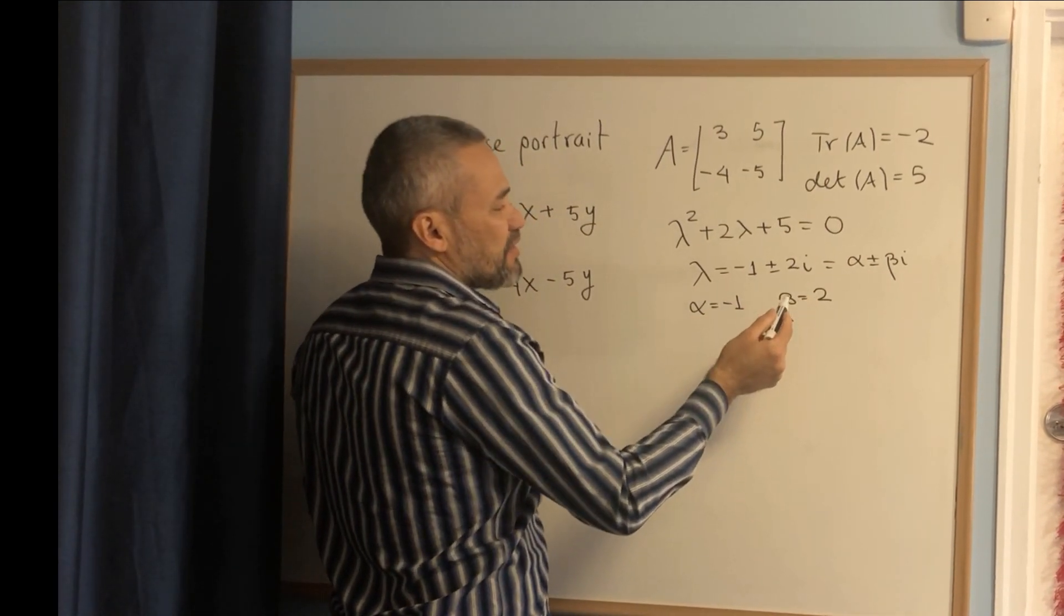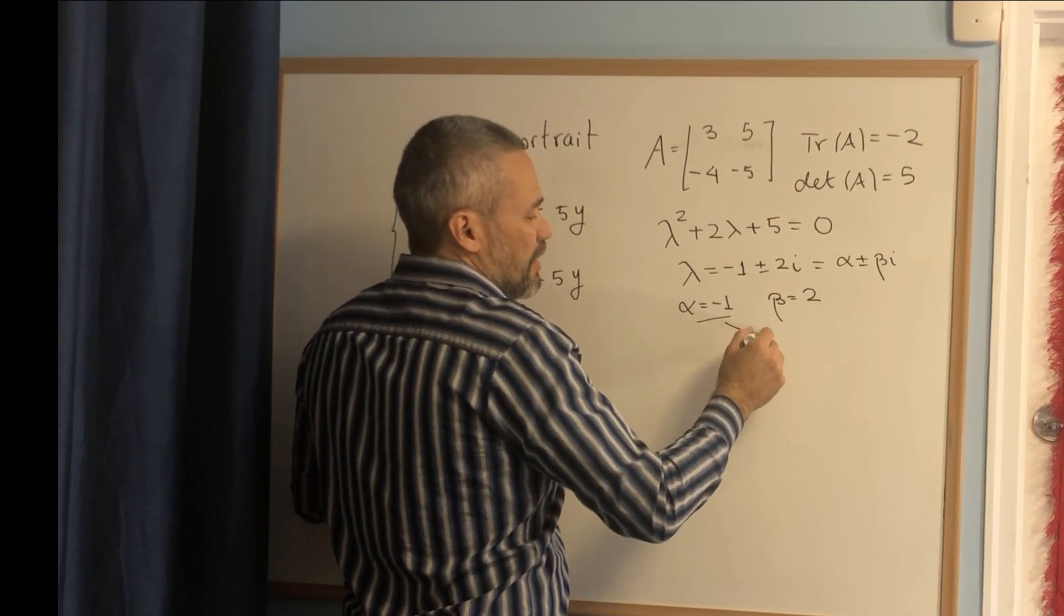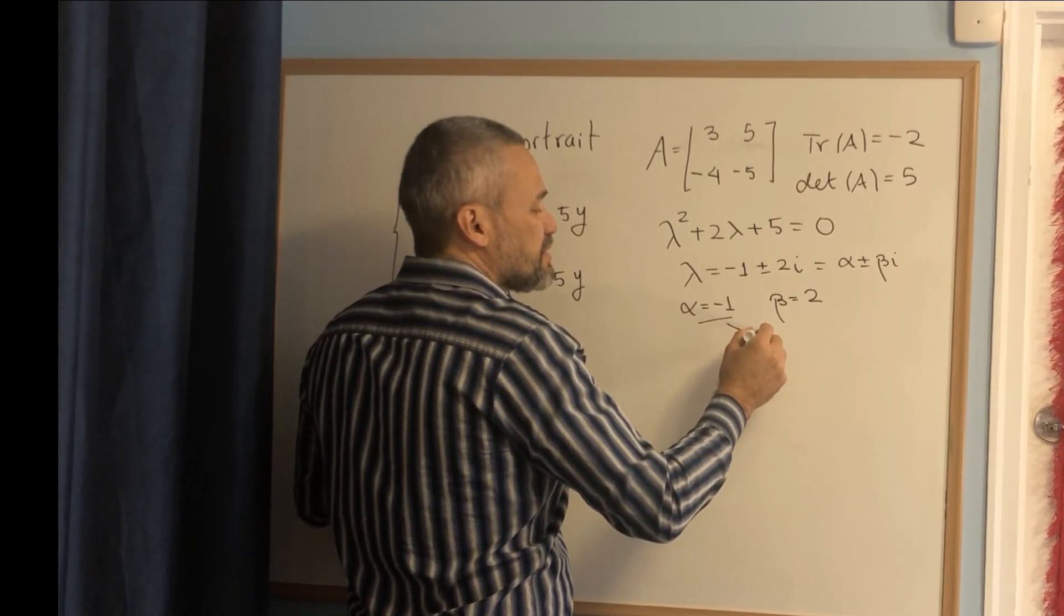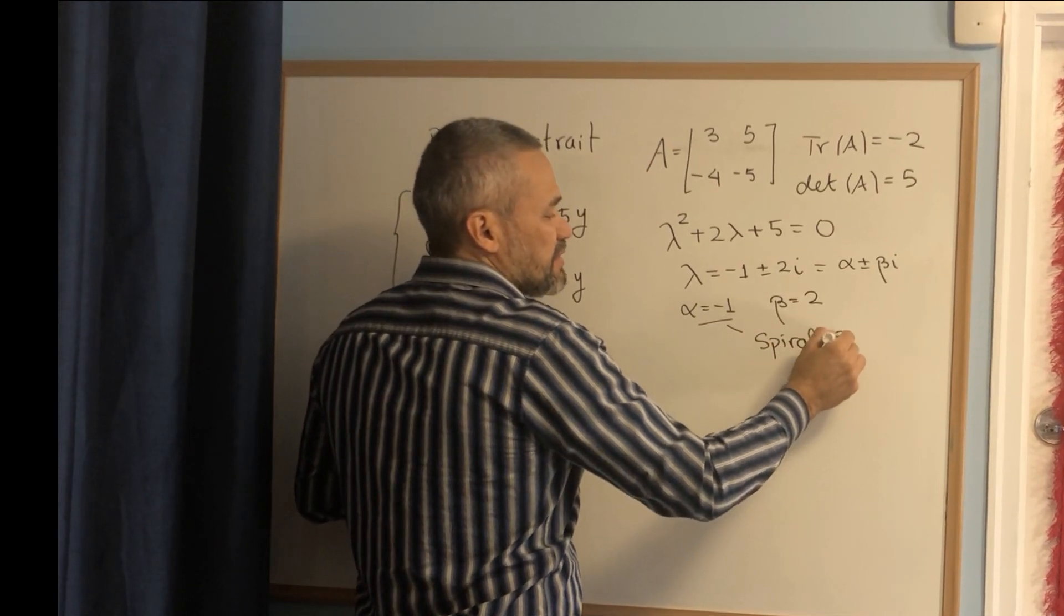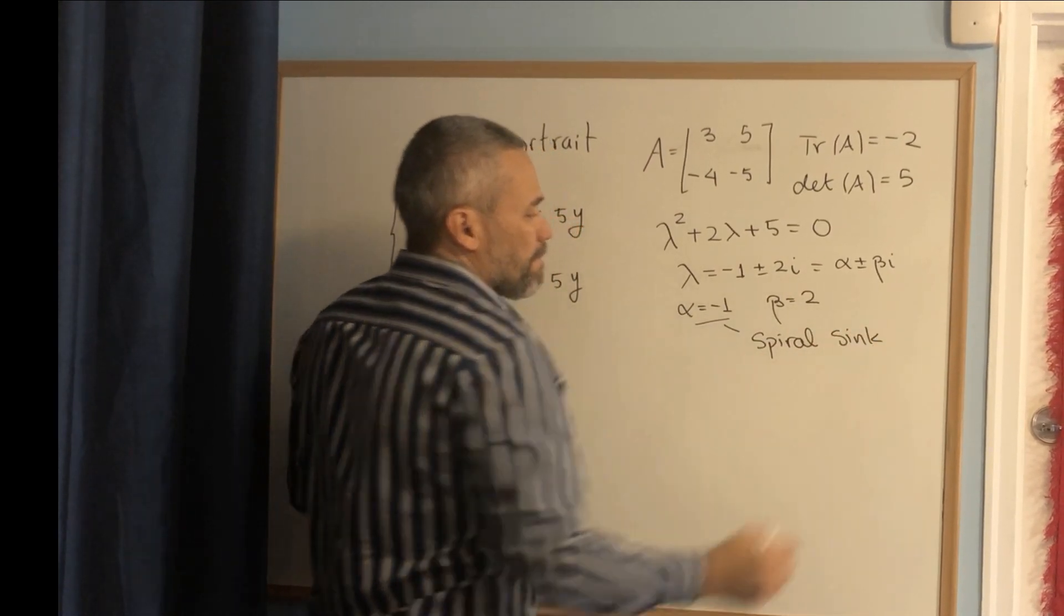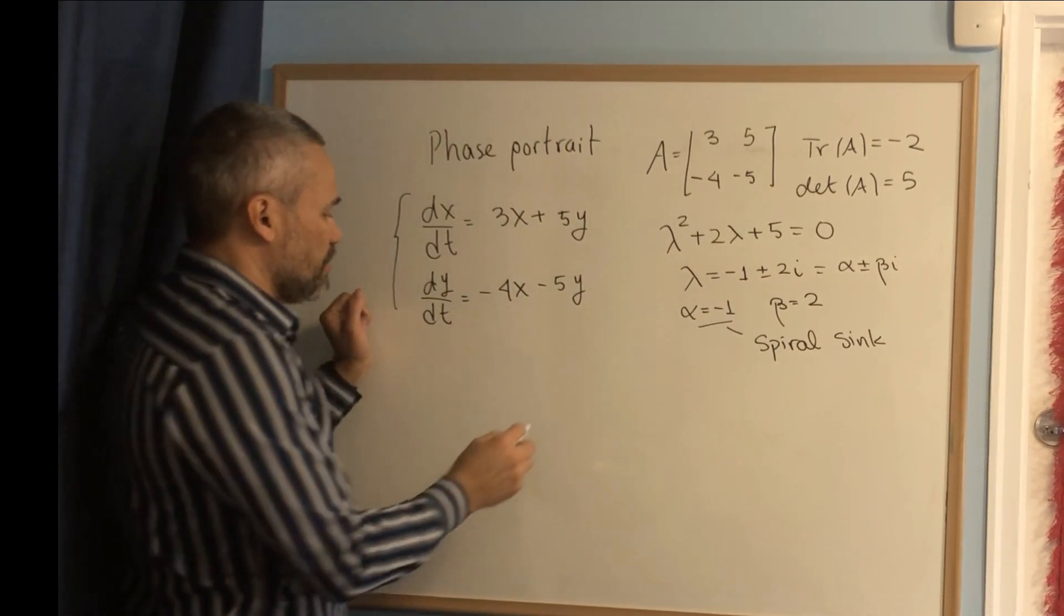Complex eigenvalues with α negative means that we have a spiral sink. In order to sketch a spiral sink, we just need to pick a vector.